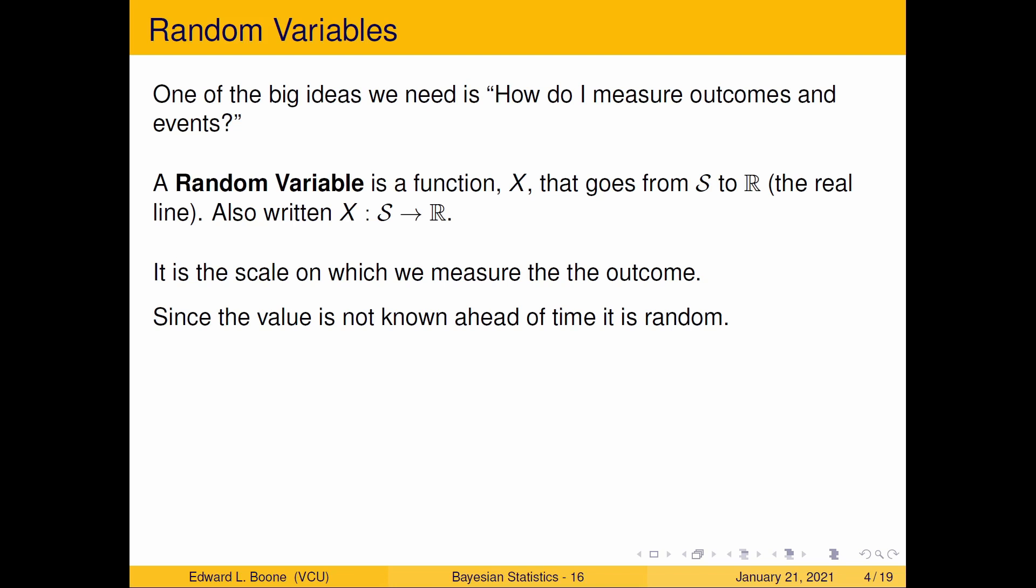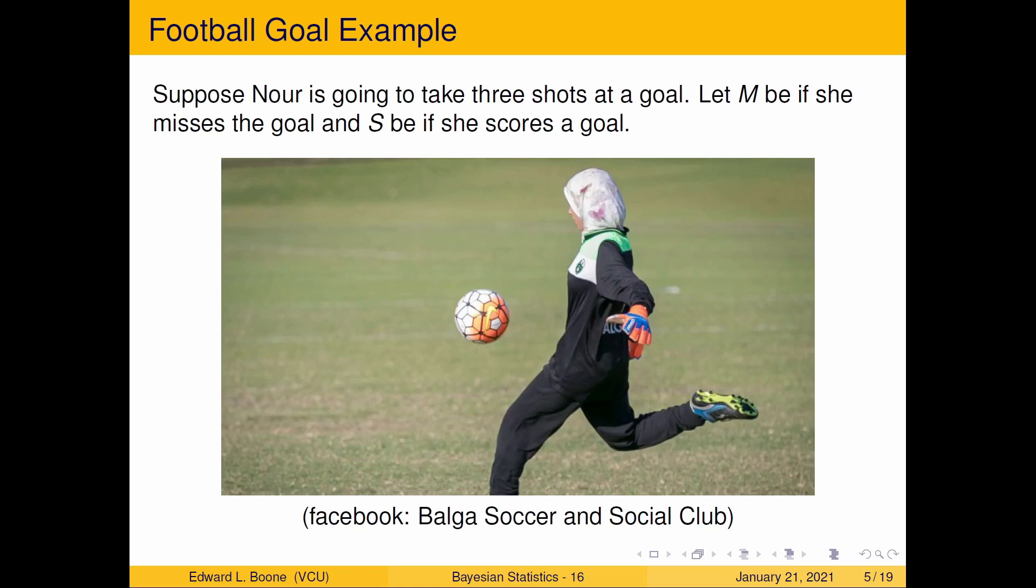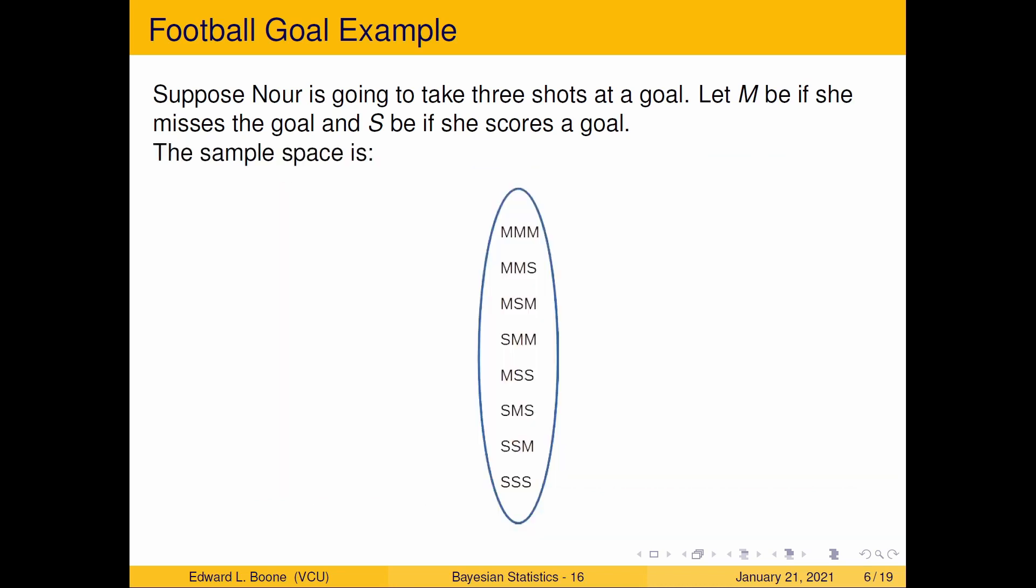We're going to look through an example here and you'll see that it's not as hard as it sounds. So suppose Noor is going to take three shots at a goal. Let M be if she misses the goal and let S be if she scores a goal. Notice that this isn't a number. We're even recording M and S. We're not recording an actual value. So that should lead you to think, maybe we need a way to turn this into a number.